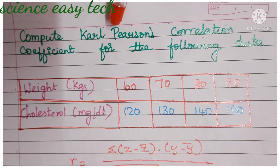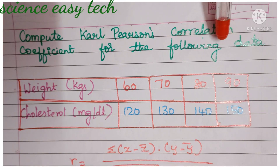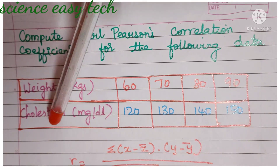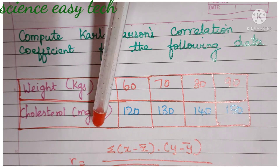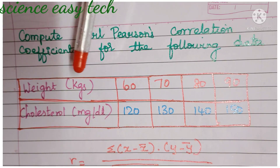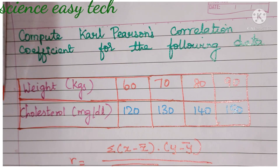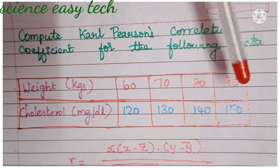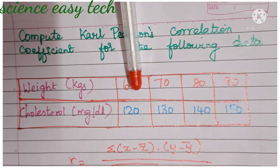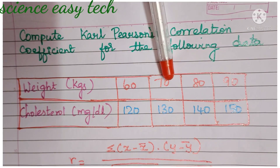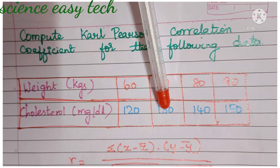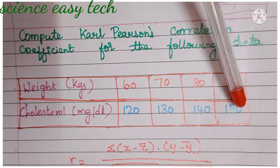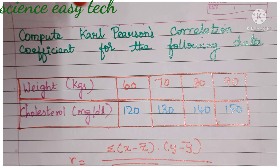Compute Karl Pearson correlation coefficient for the following data. They have given the data: weight in kg and cholesterol in mg per deciliter. Weight values are 60 kg, 70 kg, 80 kg, and 90 kg. For 60 kg the cholesterol level is 120, for 70 kg it is 130, for 80 kg it is 140, and for 90 kg it is 150.